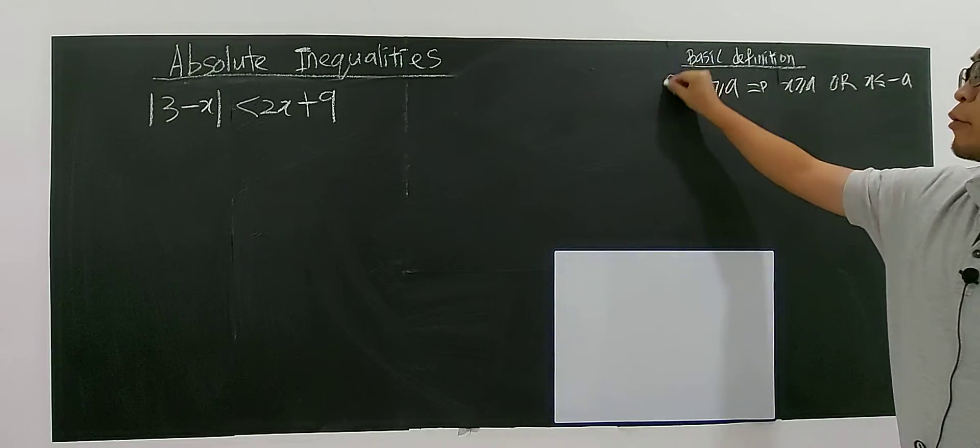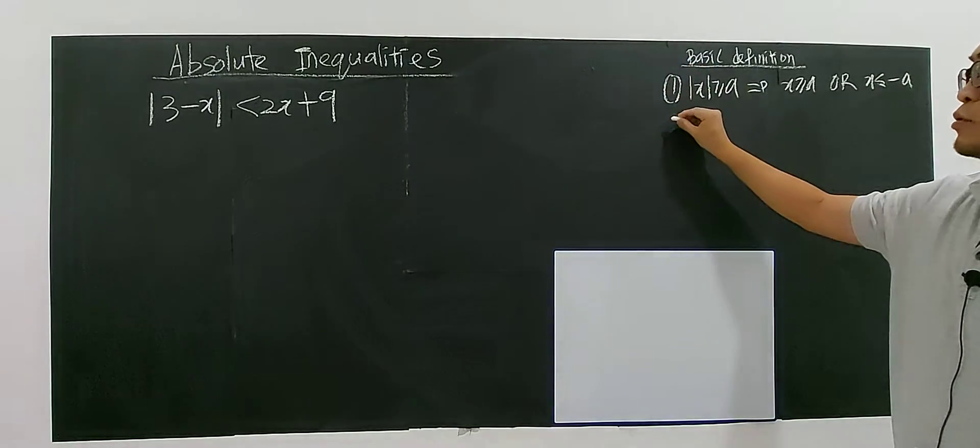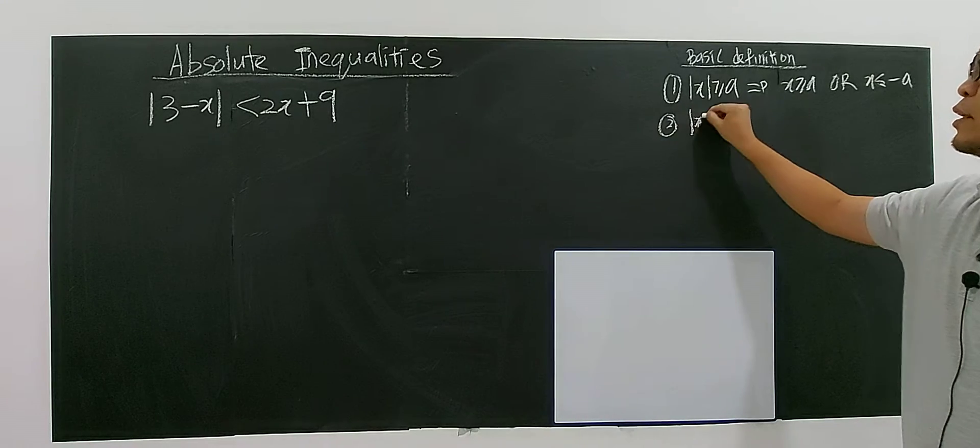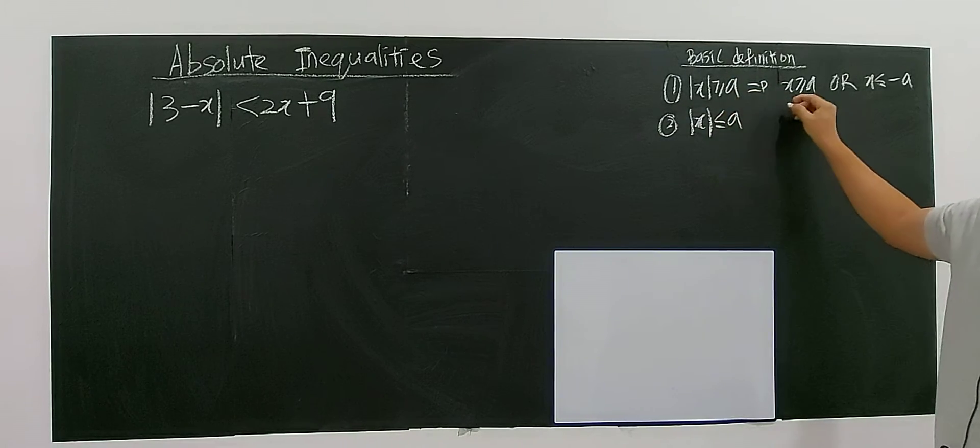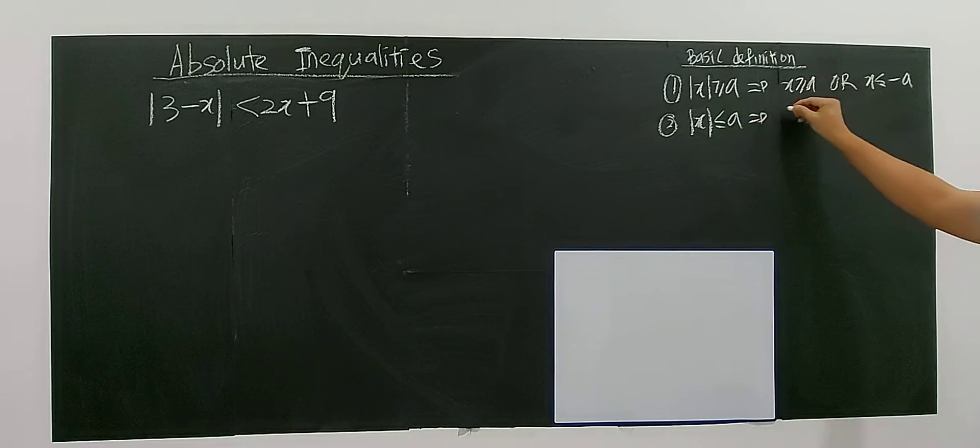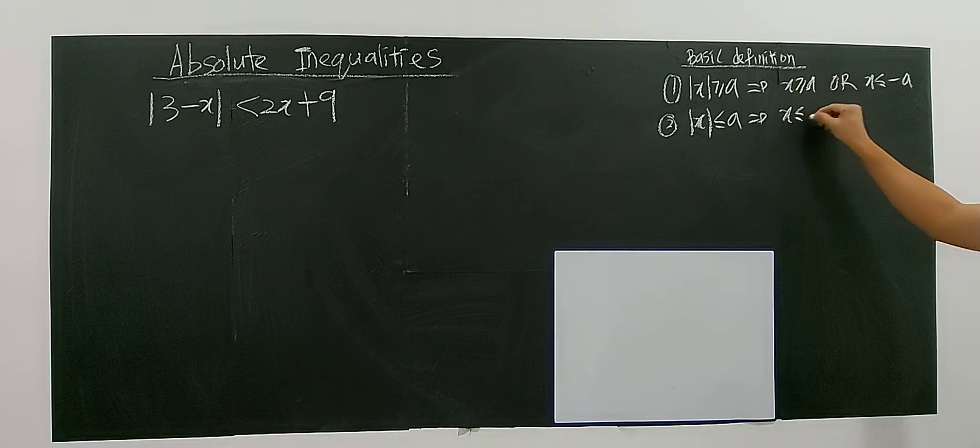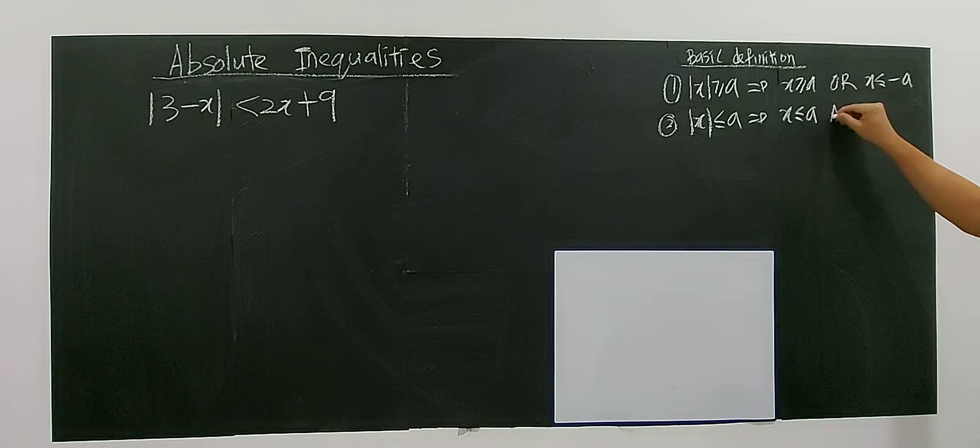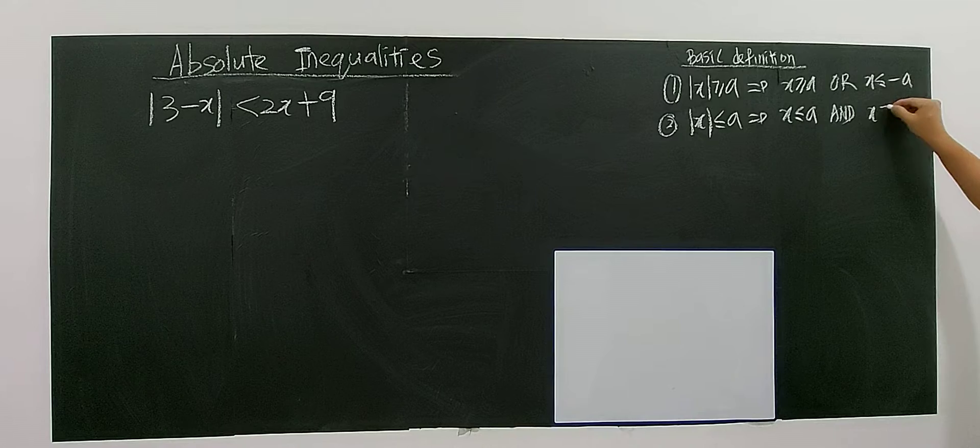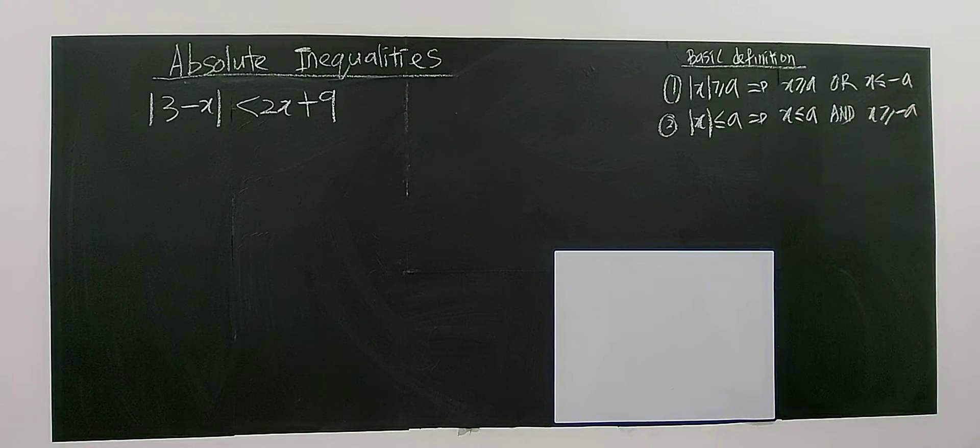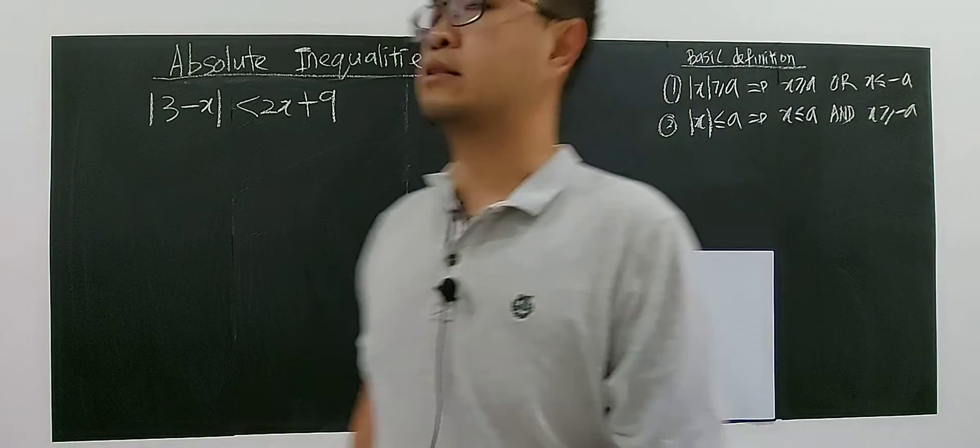So if you just memorize this first one, you can easily memorize the second one. Because if you have less than a, everything will be reversed. More than, you will have less than, or you will have and. And this one will be greater than negative a. Everything reversed.